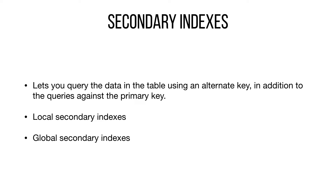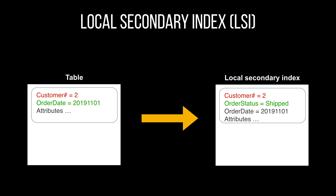There are two kinds of secondary indexes in DynamoDB. The global secondary index (GSI) has a partition key and sort key that can be different from those on the table. The local secondary index (LSI) has the same partition key as the table but a different sort key. Each table has a limit of 20 global secondary indexes and 5 local secondary indexes by default.